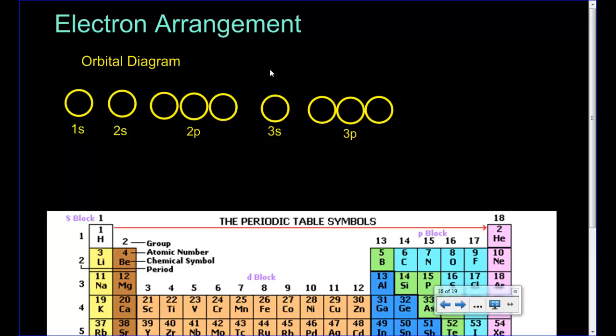In the last video, we talked about quantum numbers and realized that the quantum numbers describe the location of electrons. What we have here is an orbital diagram. This is just a shorthand way of putting down the location of those electrons based on drawing a circle to represent an orbit.